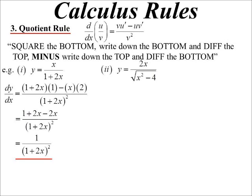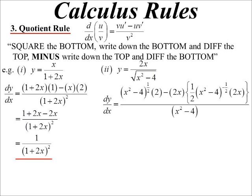2x on the square root of x squared minus 4. Square the bottom. Well, when we square the bottom in this case, square a square root, that cancels out. So I just have x squared minus 4 on the bottom. Now, the top of the fraction. So we squared the bottom. Write down the bottom, x squared minus 4 to the half. Diff the top, 2.